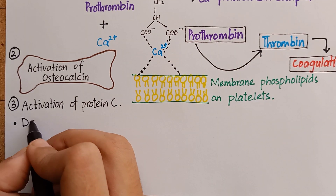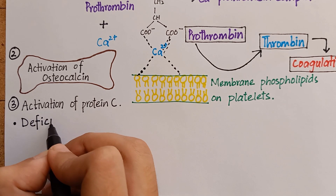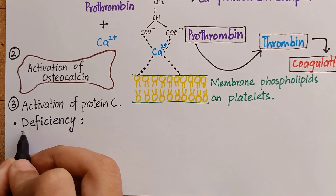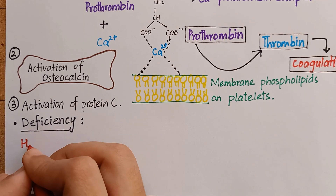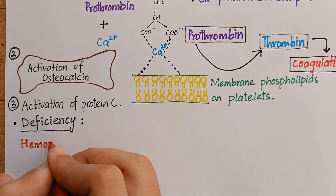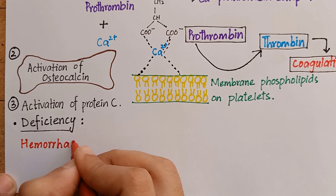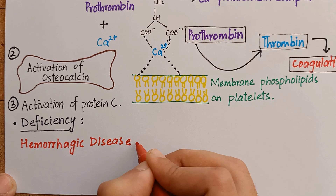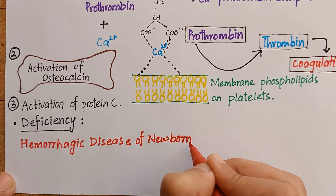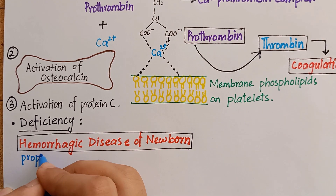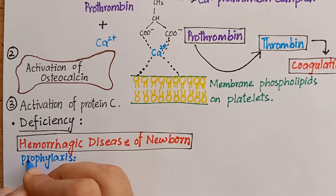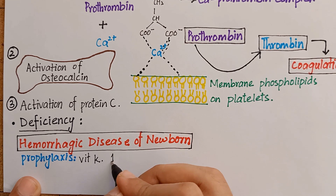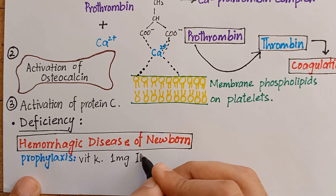Moving to clinical indications: although vitamin K deficiency is rare, newborns have sterile intestines and initially lack bacteria to synthesize vitamin K. Deficiency of vitamin K can cause hemorrhagic disease of the newborn. That is why a single prophylaxis dose of one milligram of synthetic vitamin K intramuscular is recommended in all newborns.